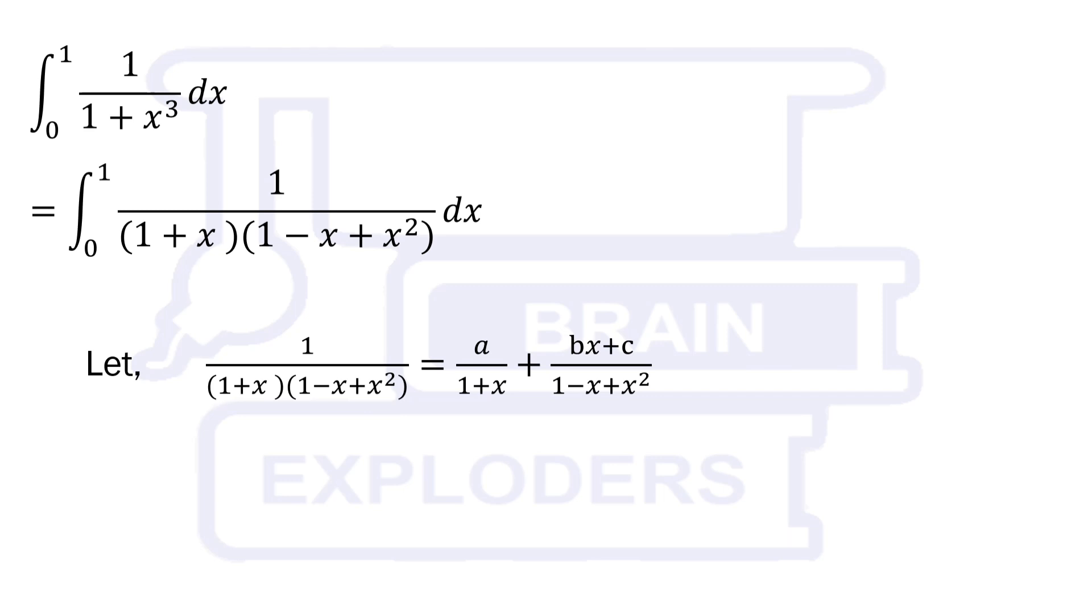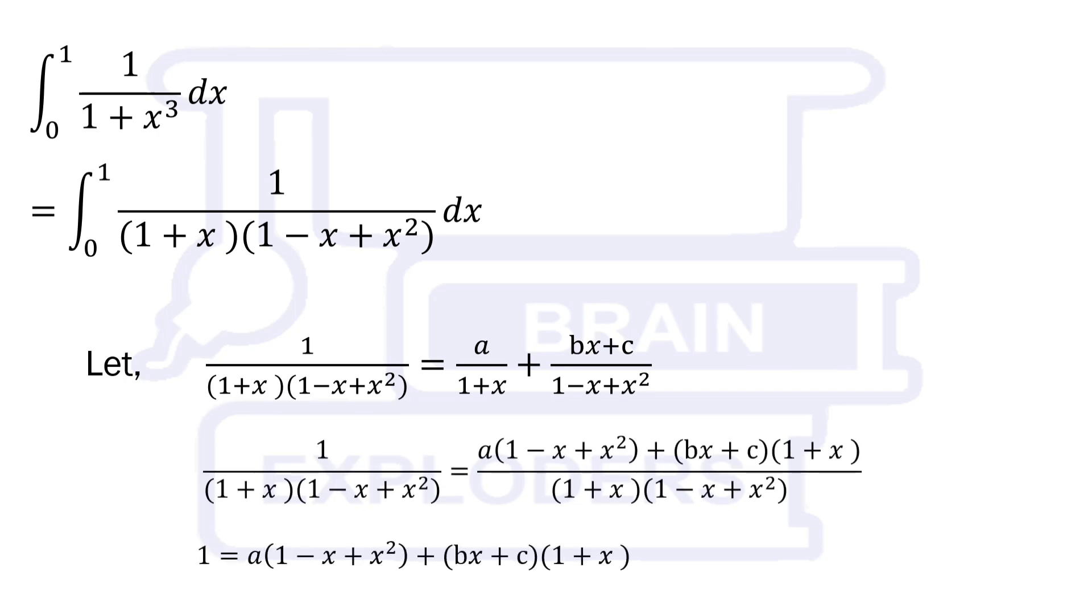Let the integrand equal a over (1 plus x) plus (bx plus c) over (1 minus x plus x squared). Now we have to find the values of a, b, and c.